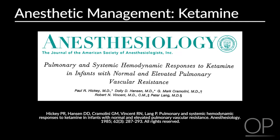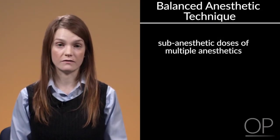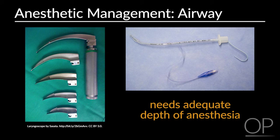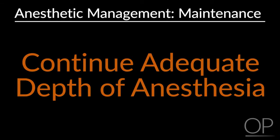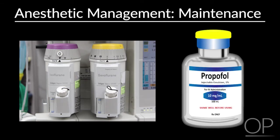The use of ketamine in pulmonary hypertension has been controversial. However, a study by Dr. Paul Hickey at Boston Children's Hospital indicated that ketamine does not change pulmonary vascular resistance unless the patient is also hypoventilating and becomes hypercarbic. A balanced anesthetic technique — using sub-anesthetic doses of multiple anesthetics — is best for these patients. Airway management is selected based on the procedure. If intubated, adequate depth of anesthesia before intubation is required. An LMA can be used but hypoventilation must be avoided to prevent hypercarbia and increased pulmonary vascular resistance.